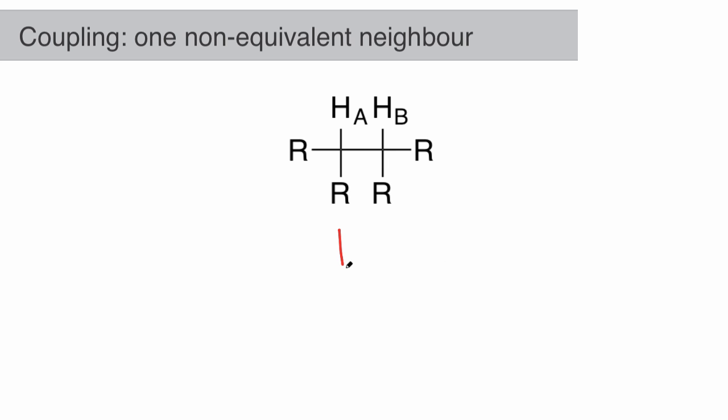If that proton is close enough to one non-equivalent neighboring nucleus with spin, so N for neighbor equals 1, the proton signal will be split.